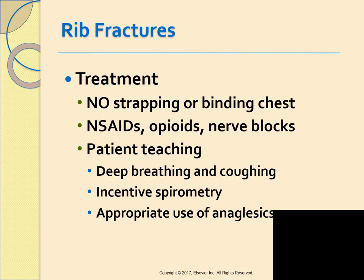The goal of treatment with a rib fracture is to decrease pain so the patient can breathe adequately and clear secretions. Strapping the chest with tape or thoracic binders is no longer recommended as it limits chest expansion and predisposes the individual to atelectasis. NSAIDs, opioids, and thoracic nerve blocks can be used to reduce pain and aid with deep breathing and coughing. Patient teaching should emphasize deep breathing, coughing, use of the incentive spirometer, and encouraging pain medication when needed.